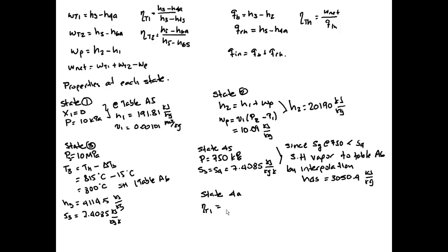Now state 4 actual: we're going to use the isentropic efficiency definition. We know that the efficiency is 0.85 and we use this relation. Solving for h4 actual, we have h4 actual equals 3210 kilojoules per kilogram. These are the first four states.